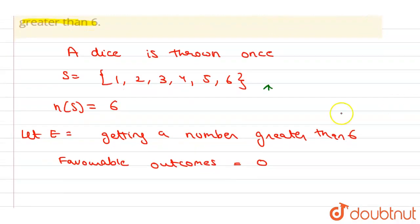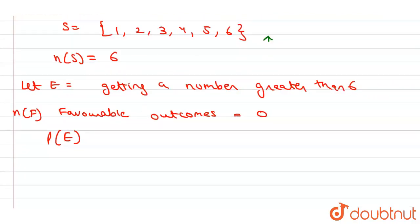So let's suppose this equals to number of favorable outcomes. So we can say that probability of E equals to number of favorable outcomes divided by number of sample space, which equals to 0 divided by 6, which equals to 0. So 0 is our answer.